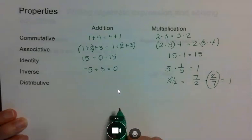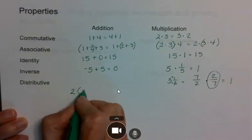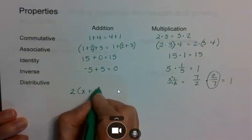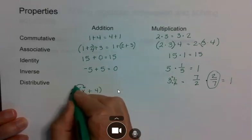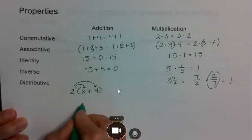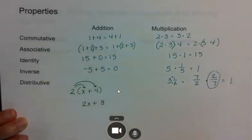The distributive property is really a combination of addition and multiplication. So if I have 2 times the quantity x plus 4, I distribute by multiplying 2 times x and 2 times 4, which gives me 2x plus 8.